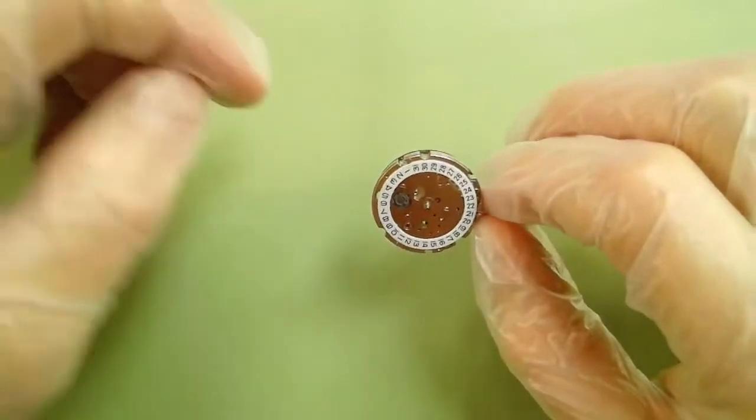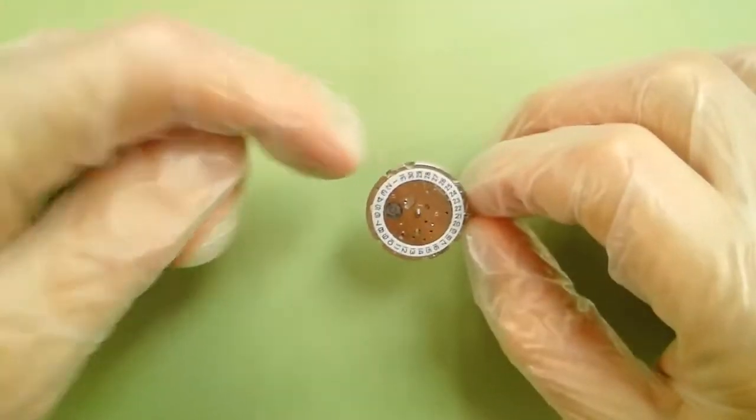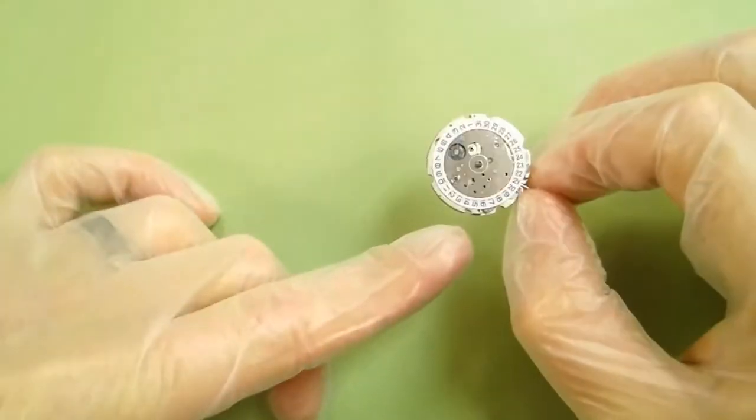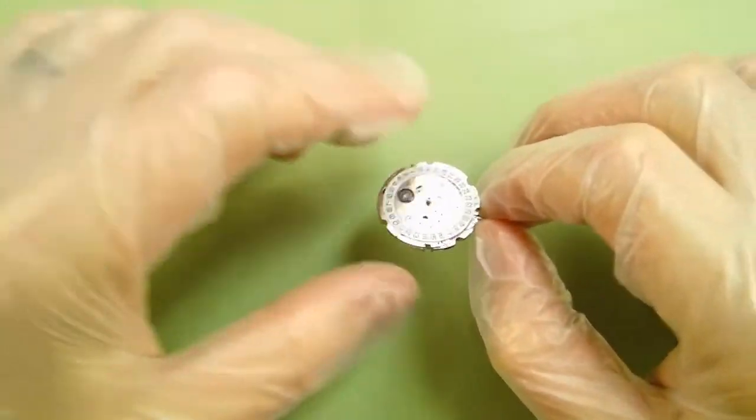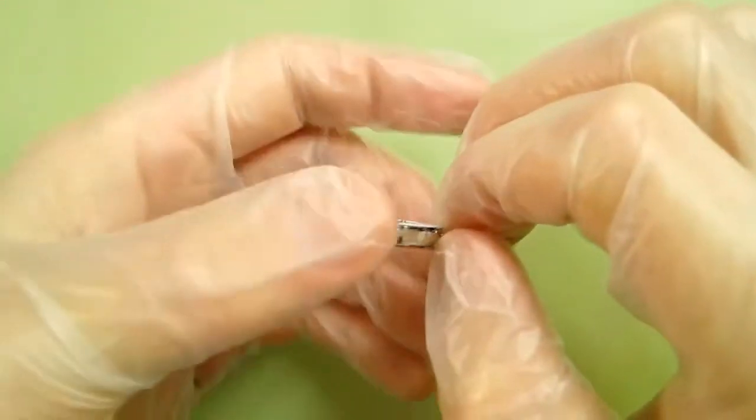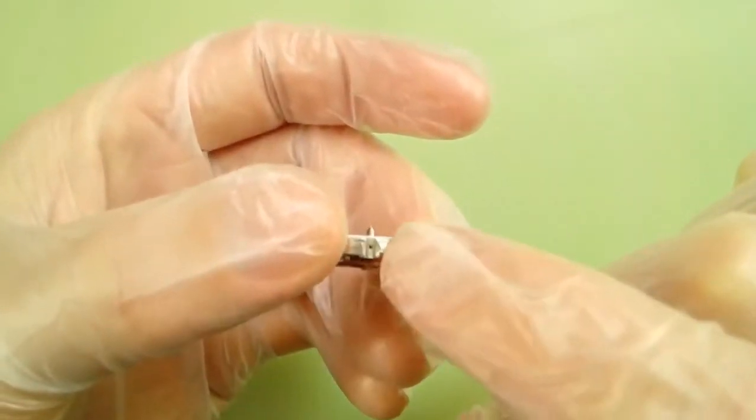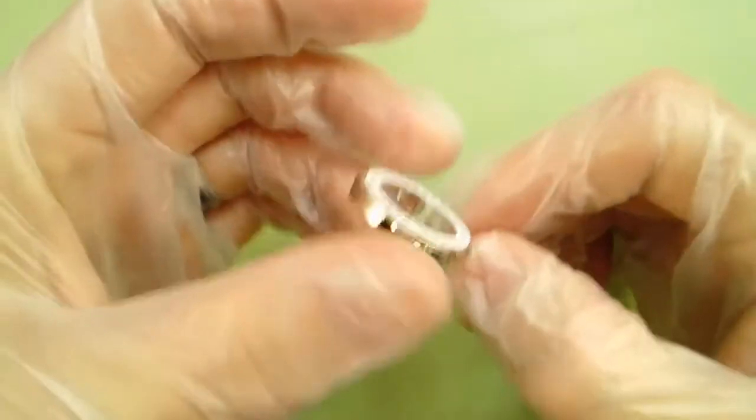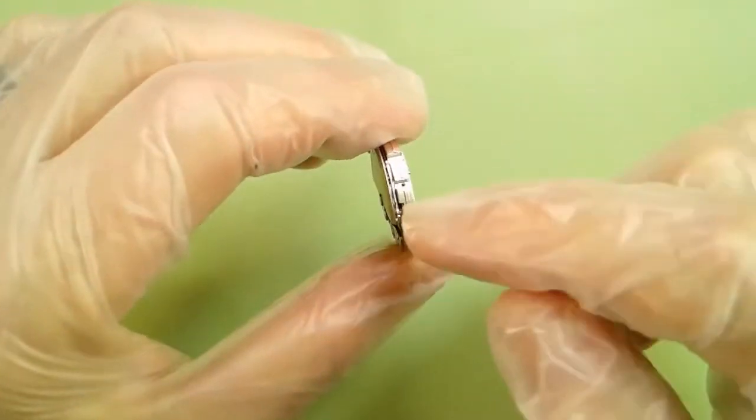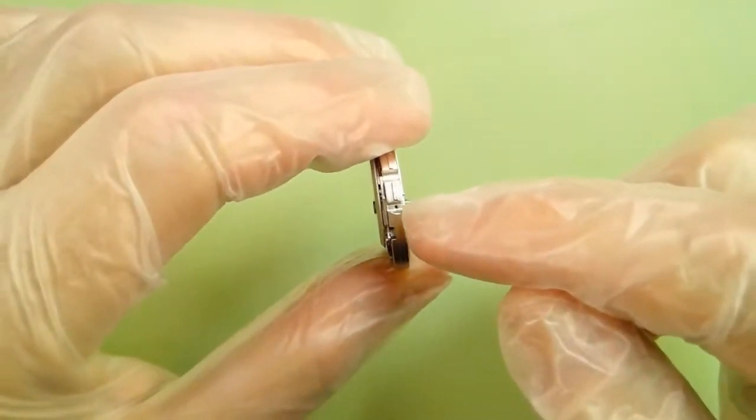So the dial feet are secured on this movement here and right here, and I'm going to zoom into that. If you look on the side of the movement, there's a hole on either side, and that's where the dial feet screws go.